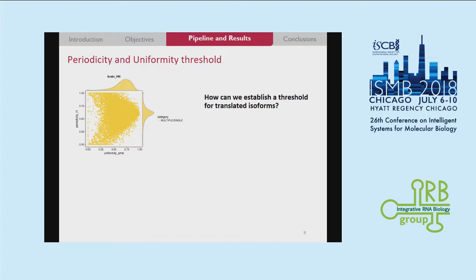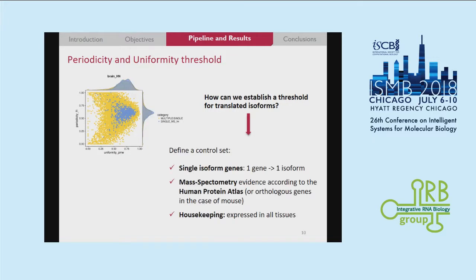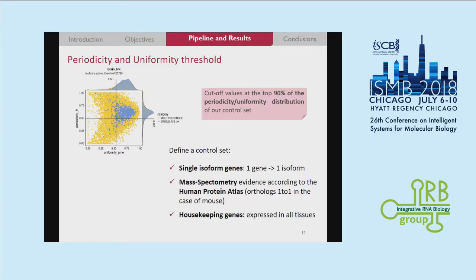That's how the distribution of uniformity and periodicity looks for a dataset — in this case, normal glia from human. But how can we establish a threshold for translated isoforms in this map of points? We need to define a control set. Our control set is formed by single isoform genes with mass spectrometry evidence according to the Human Protein Atlas, and also that they are housekeeping, meaning expressed in all tissues. We set the cutoff values at the top 90% of the periodicity and uniformity distributions of this control set, and we keep all isoforms falling there as translated.